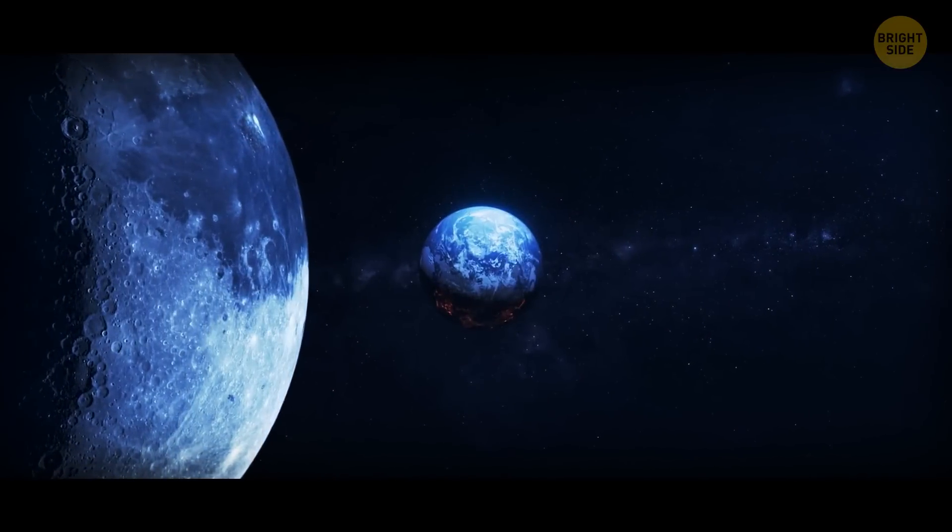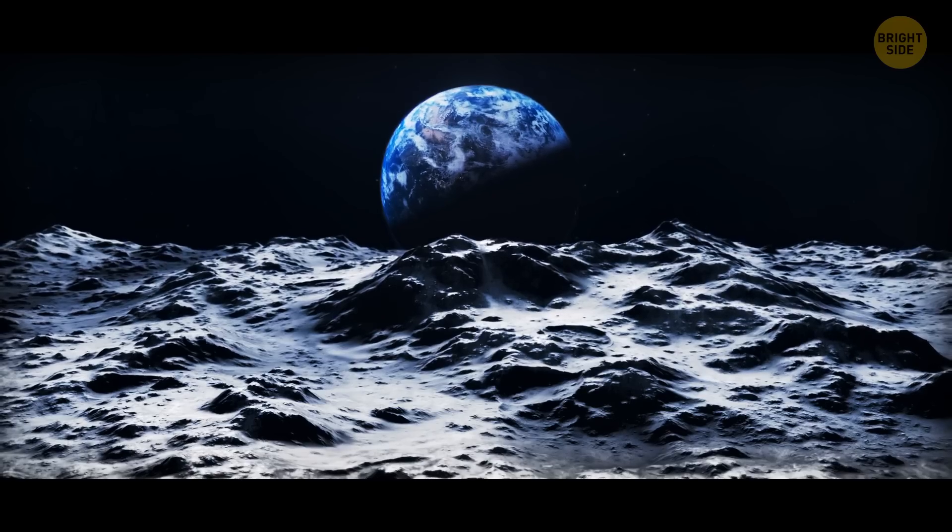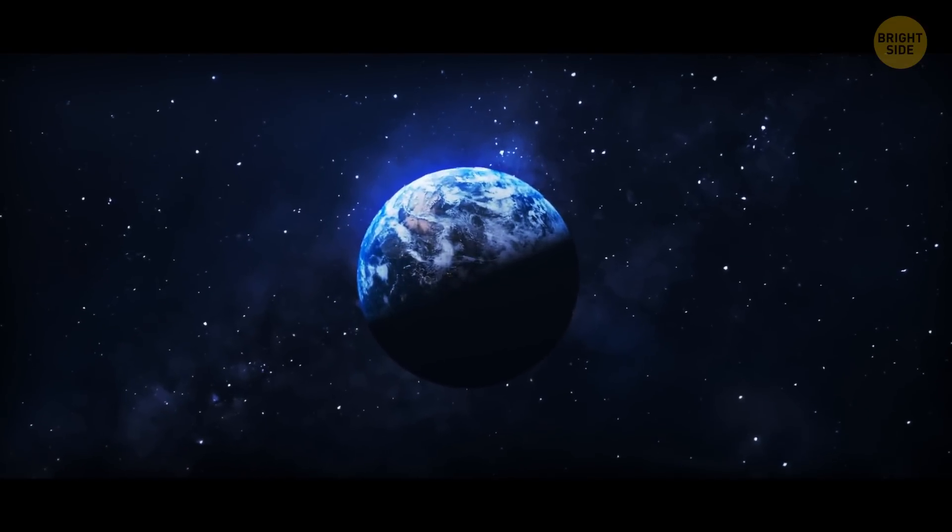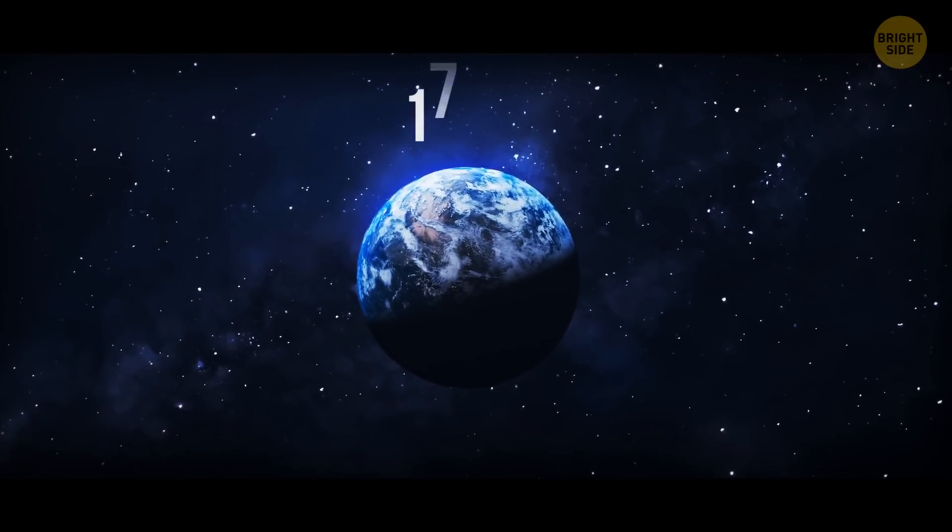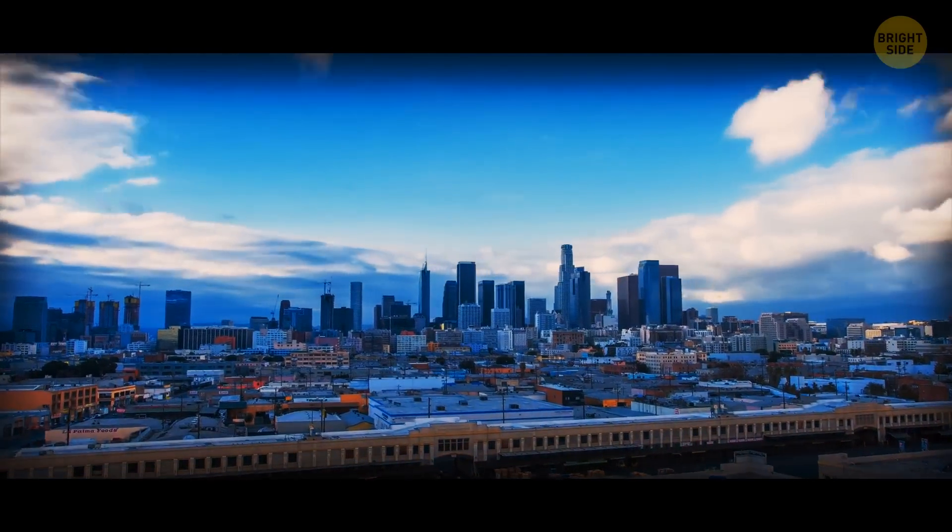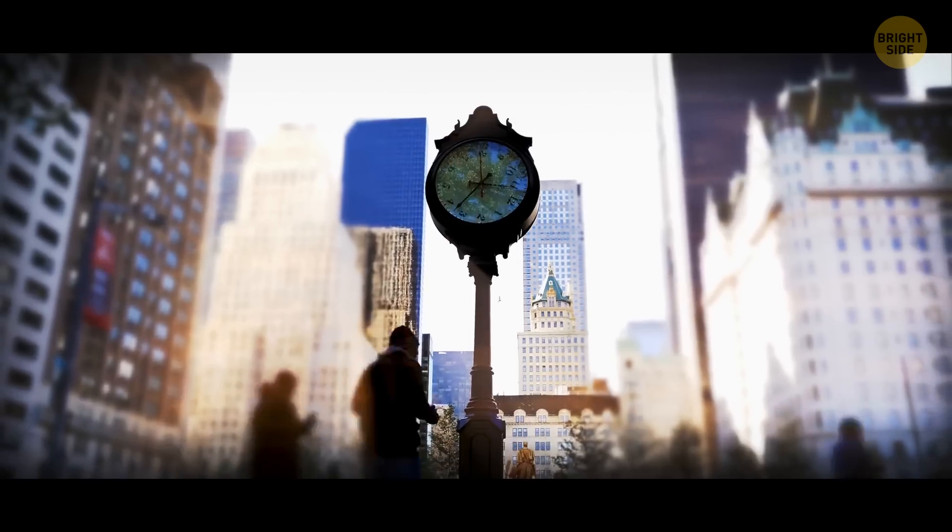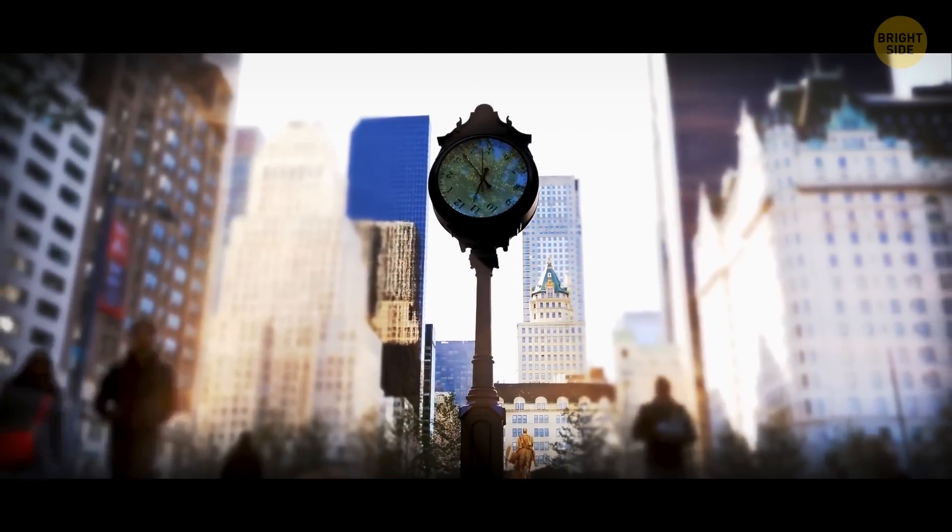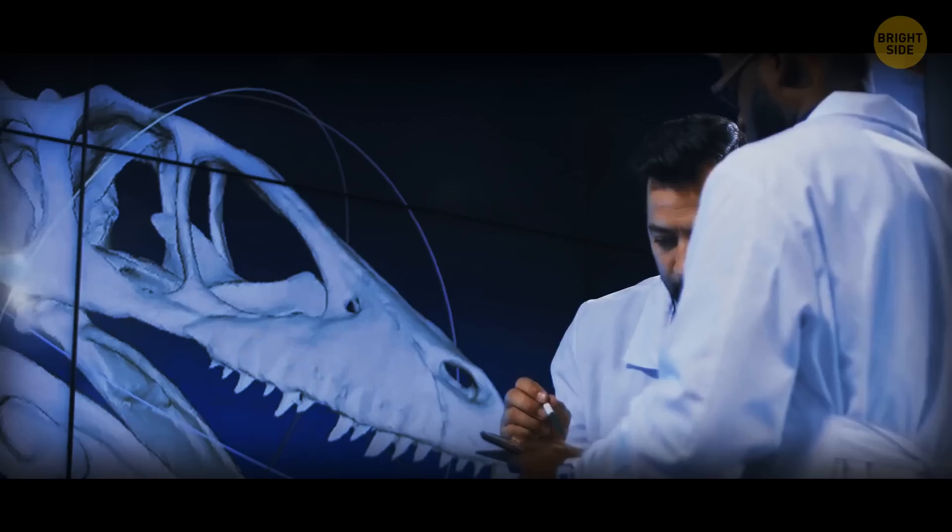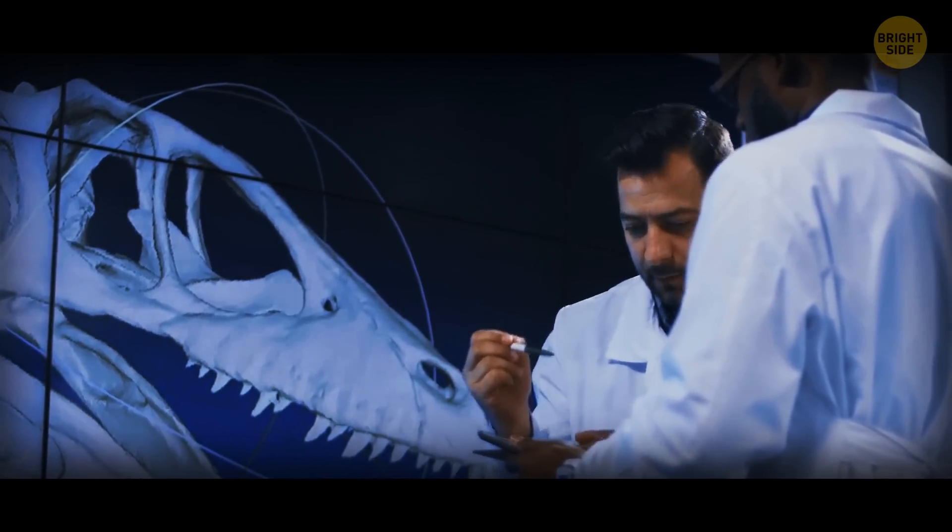Because of the effect the moon has on Earth, our planet is gradually rotating slower and slower. And I mean very gradually, at around 17 milliseconds every 100 years. So, it will take 140 million years before the world can add a single extra hour to its day. But that also means that when the dinosaurs existed, there were only 23 hours in a day.